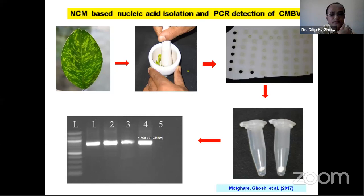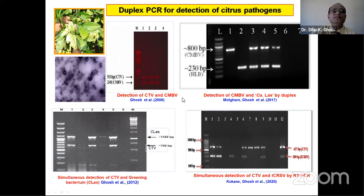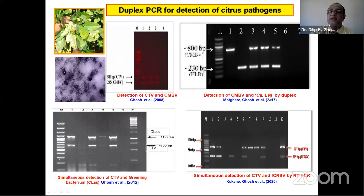In field conditions, more than one pathogen can infect citrus simultaneously. We can find mixed infection of citrus mosaic betanucleovirus and citrus greening bacterium; under electron microscopy, flexuous CTV particles alongside bacilliform betanucleovirus particles are commonly seen. In our lab, we standardized duplex PCR for detection of CTV and citrus mosaic betanucleovirus along with Candidatus Liberibacter asiaticus causing greening, and also developed duplex PCR for CTV plus greening, and CTV plus Indian ring spot virus. We are now focusing on multiplexing to detect three or four pathogens in a single assay.